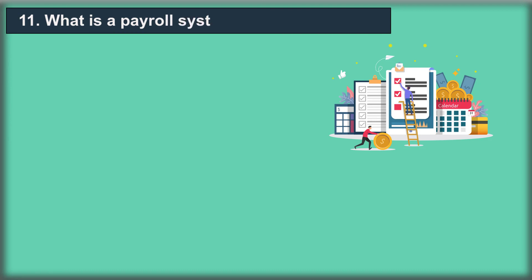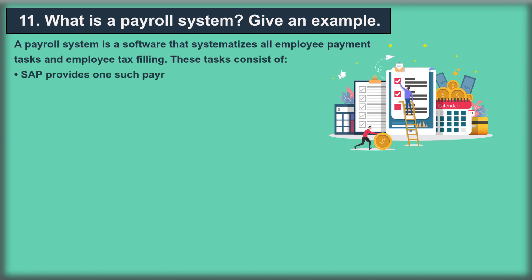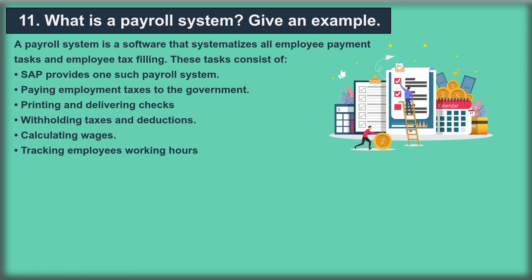Question 11: What is a payroll system? Give an example. A payroll system is software that systematizes all employee payment tasks and employee tax filing. SAP provides one such payroll system. These tasks include paying employment taxes to the government, printing and delivering checks, withholding taxes and deductions, calculating wages, and tracking employees' working hours.